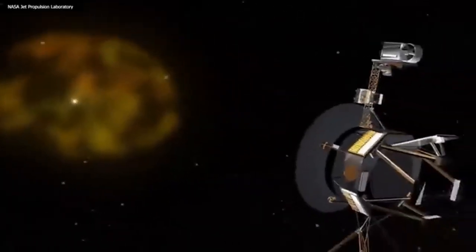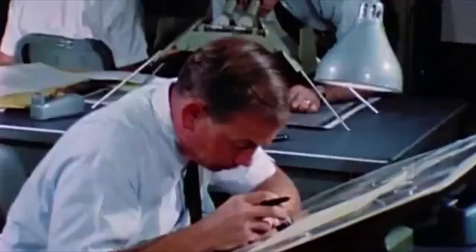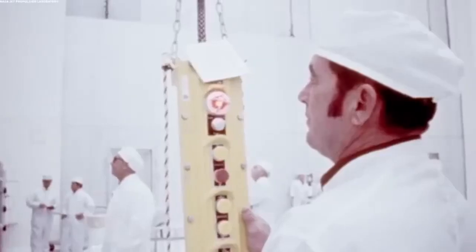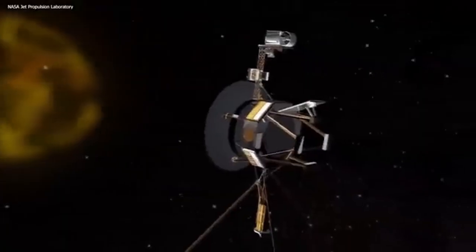As Voyager 1 ventured further into space, it continued to send back invaluable data. One of its significant achievements was the discovery of active volcanism on Jupiter's moon Io, which was a major surprise to scientists. This finding changed our understanding of geological activity beyond Earth. The spacecraft also captured detailed images of the complex and varied surfaces of Saturn's moons, including Titan, which has a thick atmosphere that intrigued scientists and paved the way for future missions like Cassini-Huygens.